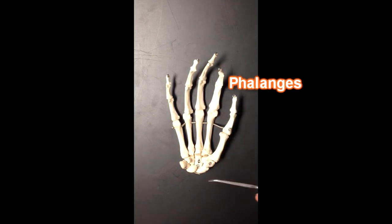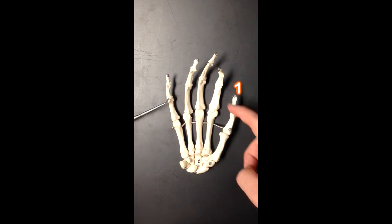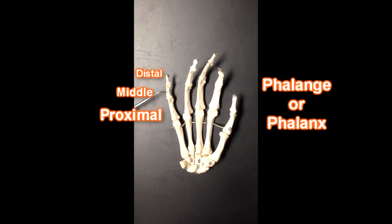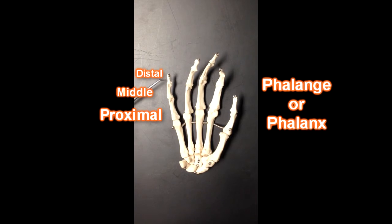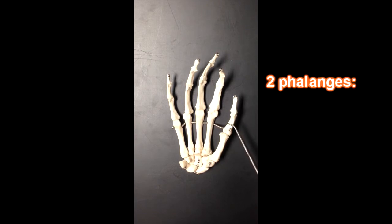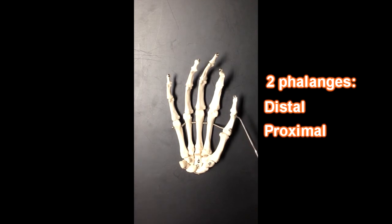Then we've got the phalanges, and there's going to be different names for the different phalanges. If I were to use this fifth digit over here, fifth finger, starting with the thumb, counting over one, two, three, four, five, this fifth digit right here, or sometimes called the pinky, would have three phalanges in it. A proximal, a middle, and a distal phalange. Sometimes this is called a proximal phalanx, a middle phalanx, and a distal phalanx. Phalange or phalanx, they mean the same thing.